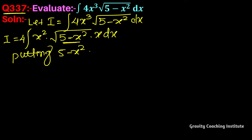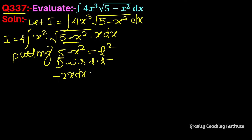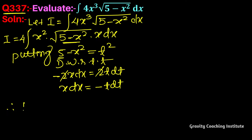Now we put 5 minus x² equal to t². Differentiating with respect to t: 5 is constant so its derivative is 0, and differentiation of x² gives 2x dx, and t² gives 2t dt. So 2 cancels, giving x dx equal to minus t dt. Therefore I equals the integration with the substitution applied.